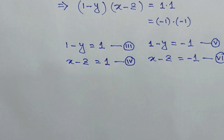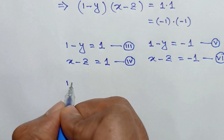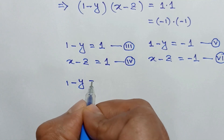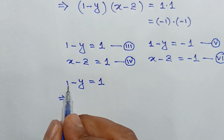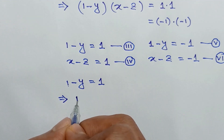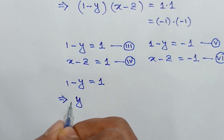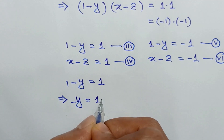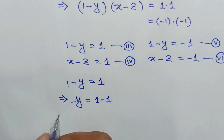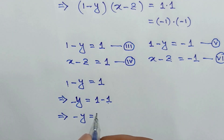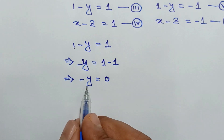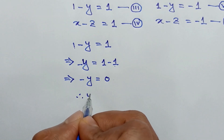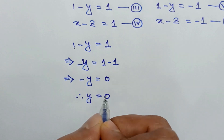From equation 3, we can write 1 minus y equals 1. Taking 1 to the right side, negative y equals 1 minus 1 equals 0. Multiplying both sides by negative 1, we find y is equal to 0.